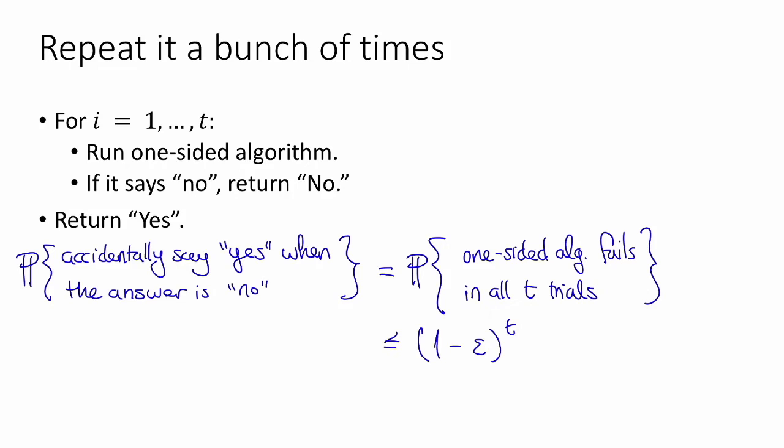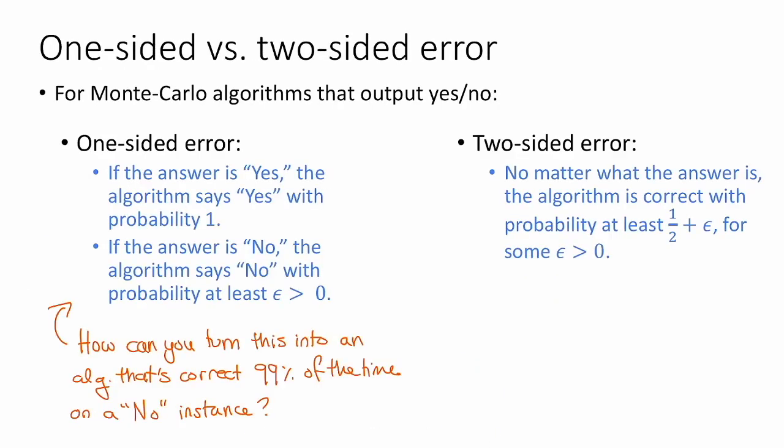So here comes a very, very useful approximation. 1 minus epsilon is always less than or equal to e to the negative epsilon. Super useful approximation, let's use it here. This is less than or equal to e to the minus epsilon t. So this means that if we choose t large enough, perhaps to the tune of like 10 over epsilon, then this number is super small. It's like e to the minus 10, which is tiny. Okay, so that's how we can boost an error guarantee that looks like this into one that is successful 99% of the time in a no instance. So that explains why this is a meaningful guarantee to have. All right, so that was one-sided error.